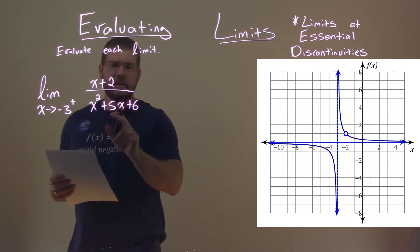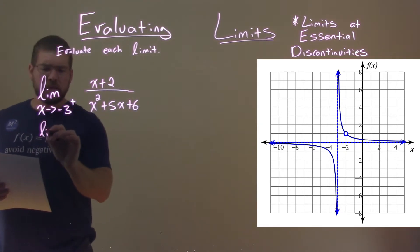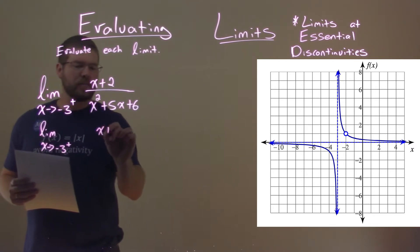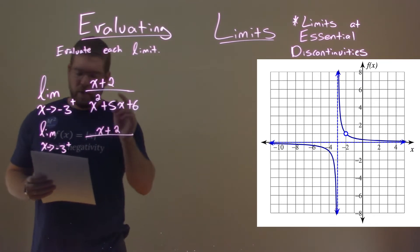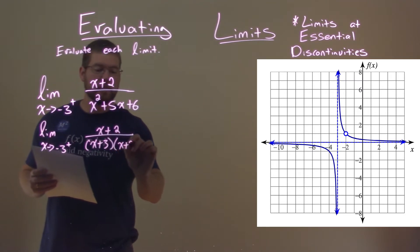Well, the bottom part can factor. So we take the limit as x approaches negative 3 from the right. We have x plus 2 in the numerator. The denominator will factor to be x plus 3 times x plus 2.